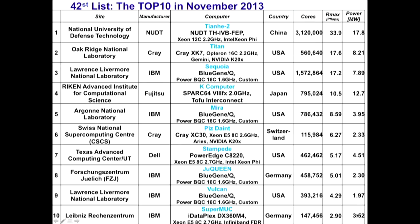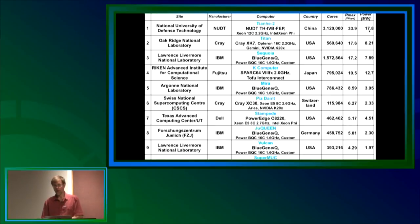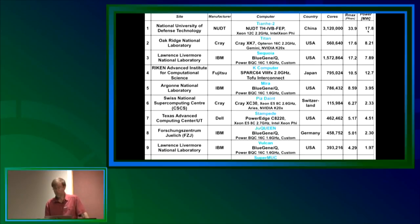The last column is very interesting: power in megawatts to run the benchmark. The top machine uses 17.8 megawatts. There are very few places in the world where you can plug it in and have that work. This makes energy a critical new metric — whether it's the battery in your cell phone or running a data center or supercomputer. On average, it's $1 million per megawatt per year. The Department of Energy wants to build an exaflop machine but doesn't want to spend more than about $20 million a year on energy, and already some machines are getting close to that.